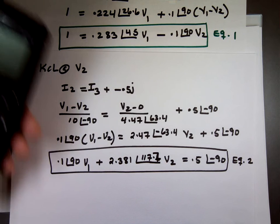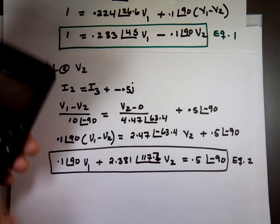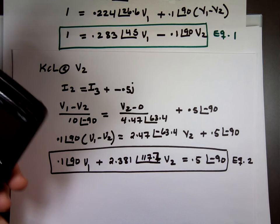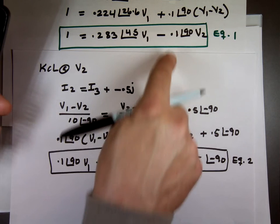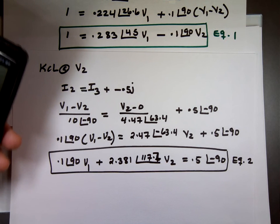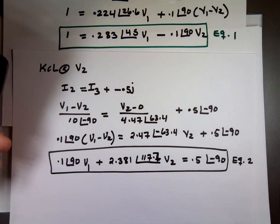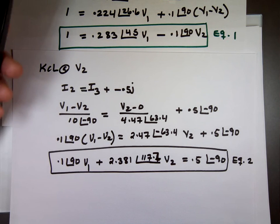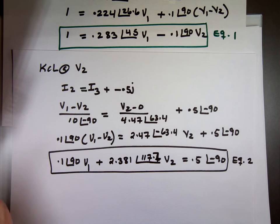Okay, the first one: 0.283 angle 45. Next one, I've got to be careful, I've got to write negative, negative 0.1 angle 90 degrees. The answer is 1. Now the next one: 0.1 angle 90. The next one: 2.381 angle 117.7. And the answer is 0.5 angle negative 90.